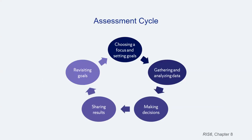The assessment cycle is based on five major steps. Typically starting at the top of the cycle, library assessment practitioners begin by choosing a focus and setting goals, usually centered on a library service, resource, space, or other library offering. Once goals are set, data of various forms is collected and analyzed, decisions are made, results are shared, and goals are revisited to start another iteration of the cycle. While this is a general framework, variations occur — for example, it's often advisable to share results with users, stakeholders, colleagues, and partners prior to making decisions. Thus, the cycle is suggestive but not prescriptive.